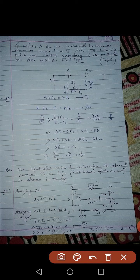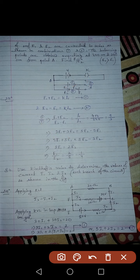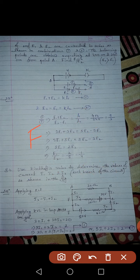When we discuss the potentiometer, the first equation written is E1 equals K times L1, where L1 is the balancing length. But here, in case 1, both E1 and E2 are connected together in the circuit, so the total EMF is E1 plus E2. Therefore the first equation becomes: E1 plus E2 equals K times L1.